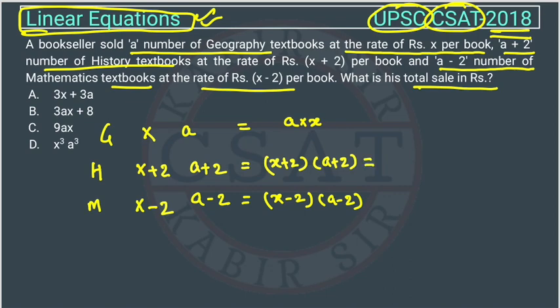We will solve it here. This will become ax plus 2x plus 2a plus 4. Similarly, we will open this equation so it will become ax minus 2x minus 2a plus 4, and this is ax here.